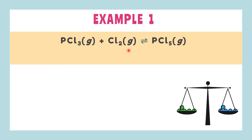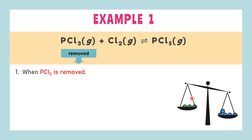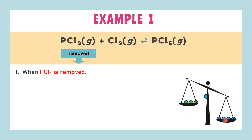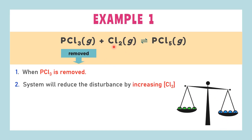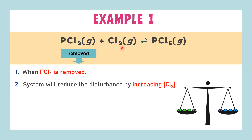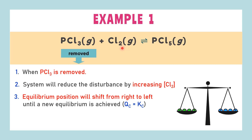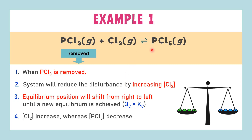Given the following chemical reaction at equilibrium: PCl3 reacts with Cl2 to form PCl5, all in gas state. When an amount of PCl3 is removed, the reaction will no longer be at equilibrium. The system will reduce the effect of disturbance by increasing the concentrations of other species on the reactant side, which in this case is Cl2. The equilibrium positions will shift backward from right to left until a new equilibrium is reached, so concentrations of Cl2 will increase while concentrations of PCl5 will decrease.